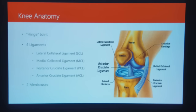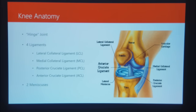Now in front there we have the anterior cruciate ligament. That's going to start on the posterior lateral side of the femur and work its way forward and down to the anterior medial side of the tibia. The ACL prevents anterior displacement of the tibia — basically the tibia moving forward and medially at the same time.